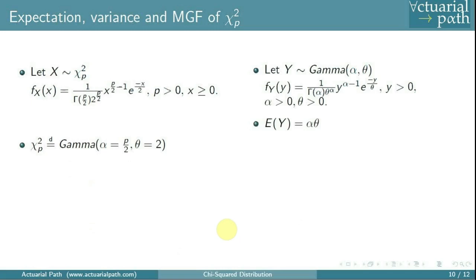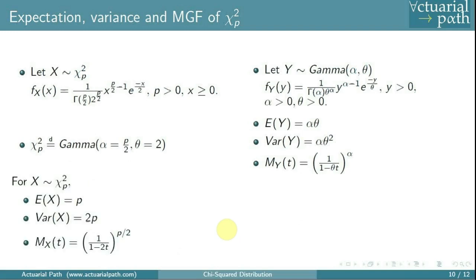From the gamma distribution lesson, the expected value is alpha times theta, the variance is alpha times theta-squared, and the MGF is [1 / (1 - t*theta)]^alpha. Substituting alpha = p/2 and theta = 2 for the chi-squared distribution: the expected value is p/2 * 2 = p; the variance is p/2 * 4 = 2p; and the MGF is [1 / (1 - 2t)]^(p/2). These give us the expected value, variance, and moment generating function of the chi-squared distribution with p degrees of freedom.